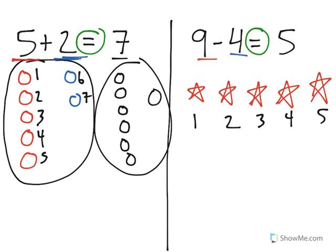If I count, we have 5. So, the subtraction problem 9 minus 4 is the same thing. It is equal to just having 5 in your group.